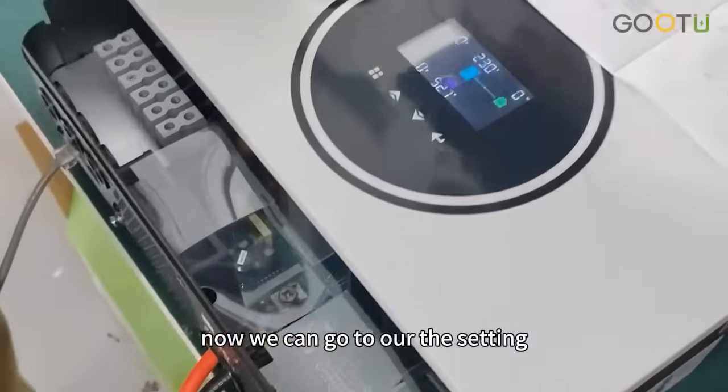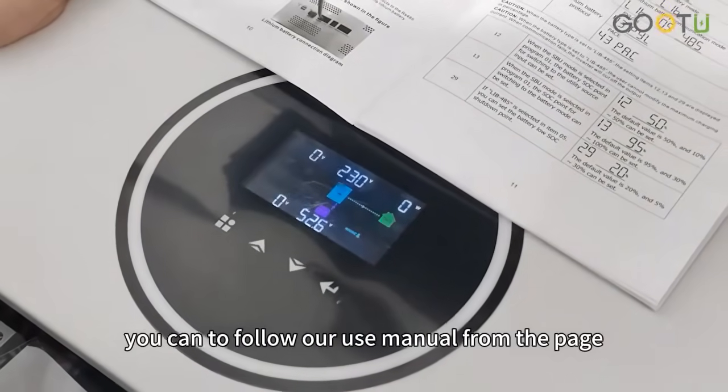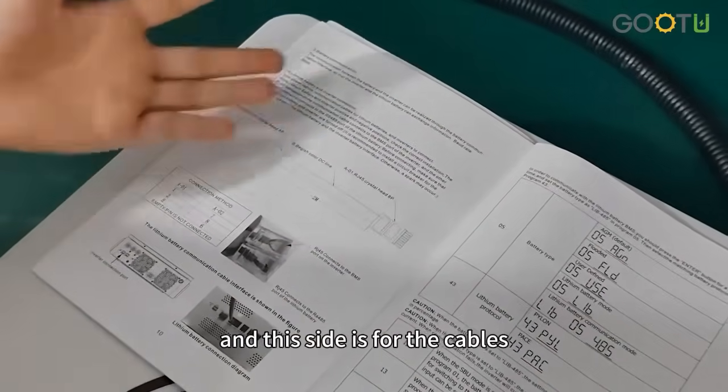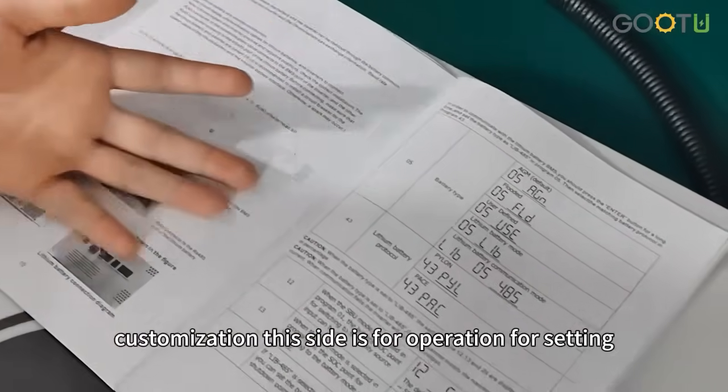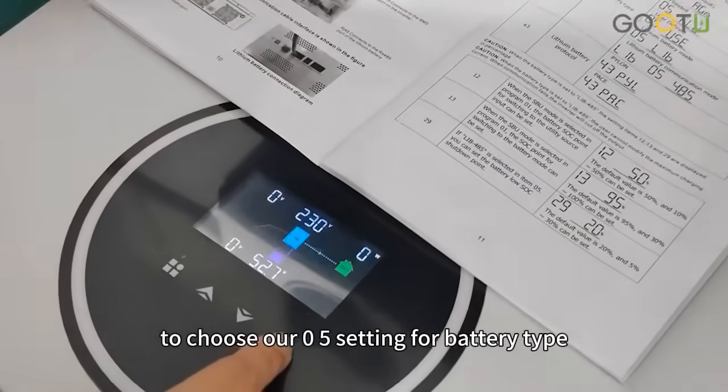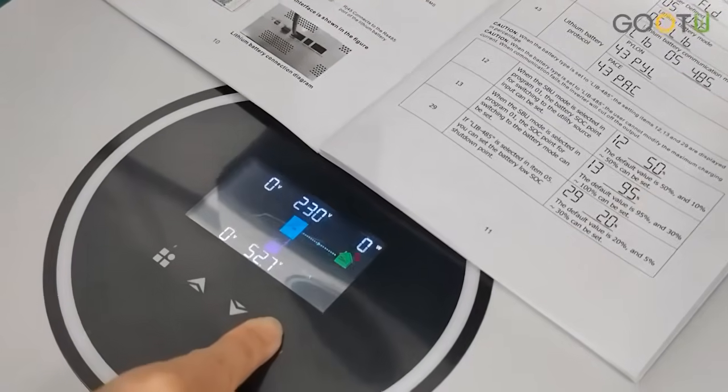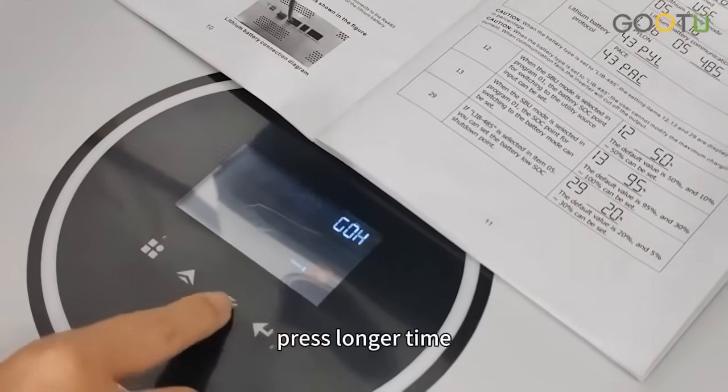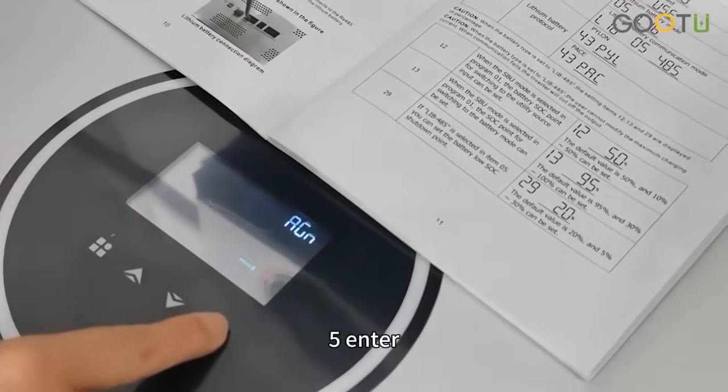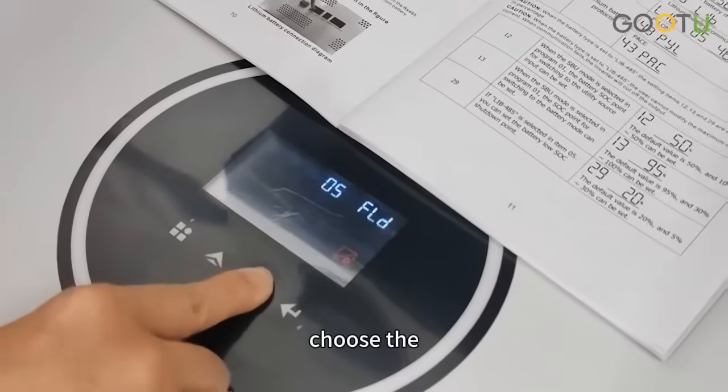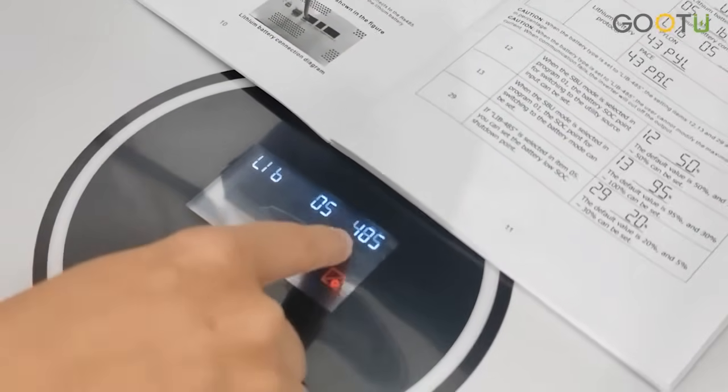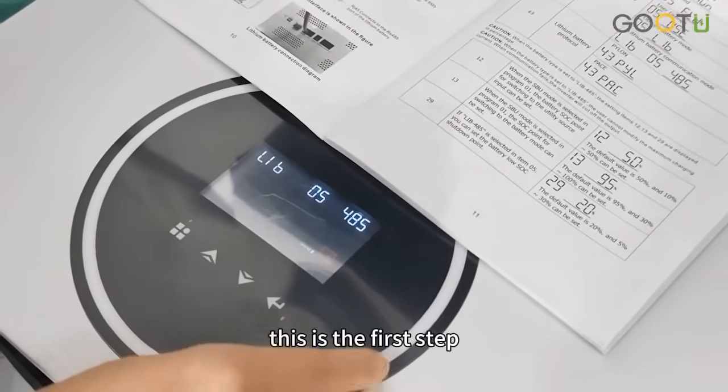Now we can go to our settings. For the setting, you can enter following our user menu from page 11 to see the details. This side is for the cable's customization, and this side is for operation for setting. The first step for setting is to choose our 05 setting for battery type. So now you can press for a longer time, go to 05, enter, and choose LIB485A. This is the first step.